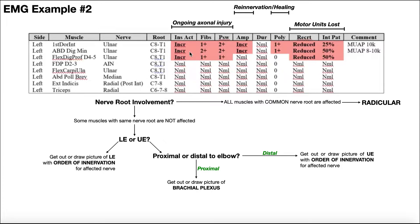So where is the damage? The first dorsal interosseous is in the hand. The abductor digiti minimi is also in the hand. And the flexor digitorum profundus — the components controlling digits four and five — the muscle belly is in the forearm. All three of these affected muscles are distal to the elbow. So what I'm going to do is get out a picture or draw a picture of the upper extremity and look at the order that motor branches come off those nerves to the particular muscles, then diagnose it that way.